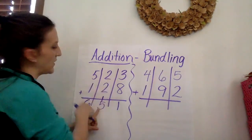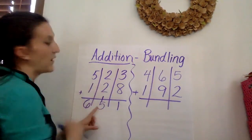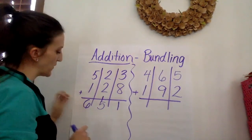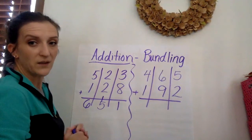There is nothing that needs to move next door. So we add the hundreds just as they are. 5 plus 1 equals 6. Ready to practice another one with me?